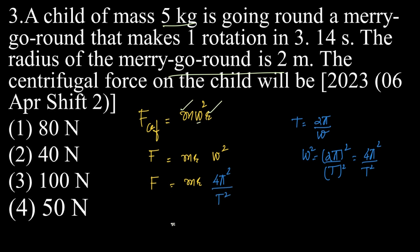Now, what is m? m is the given mass, which is 5 kg. What is radius? Is it in meters? Yeah, radius is 2 meters. So 5 kg into 2 meters into 4π² by T².